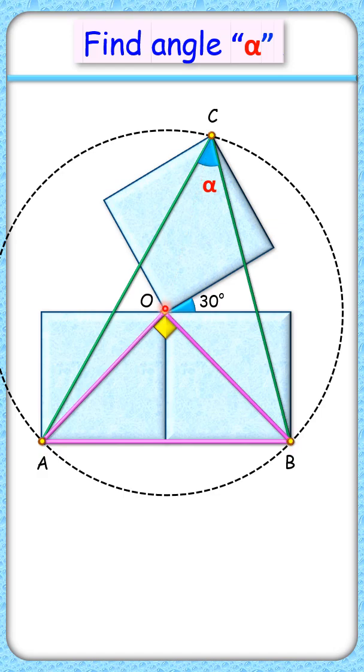And by theorem, we know that it will sustain half of that angle at the circumference. And thus the value of alpha is nothing but 45 degrees.